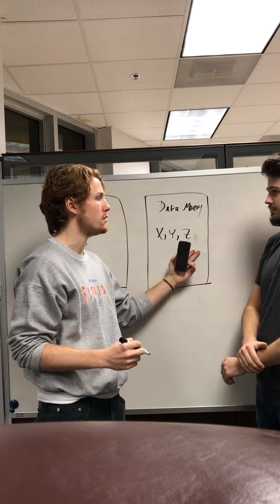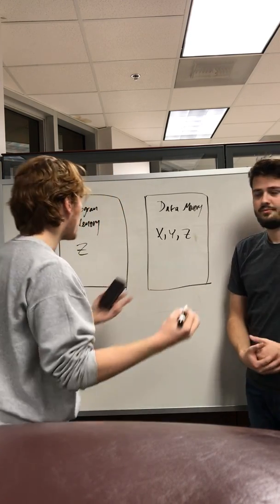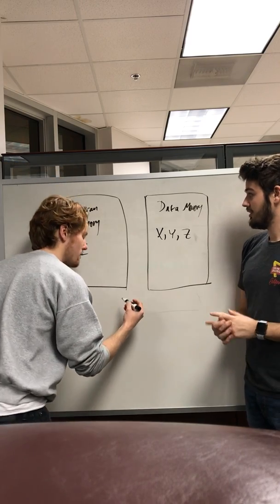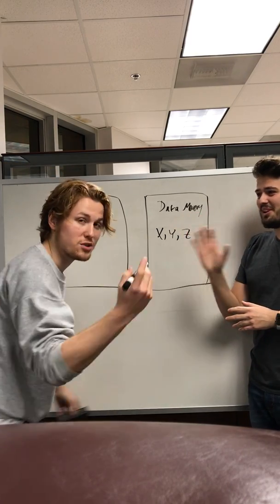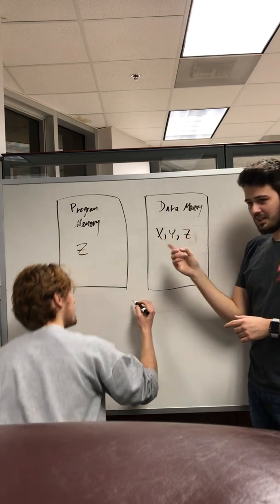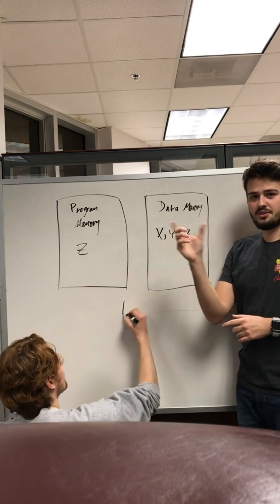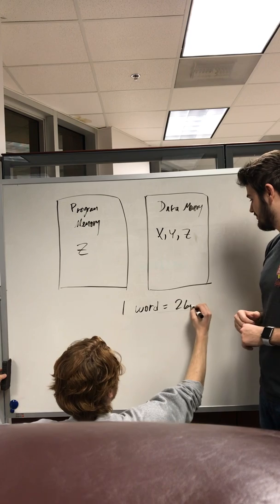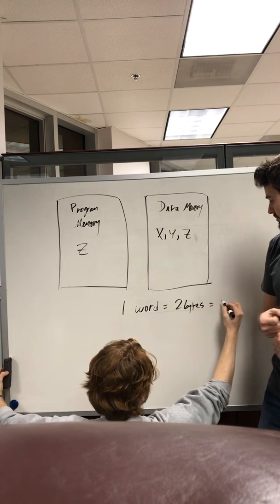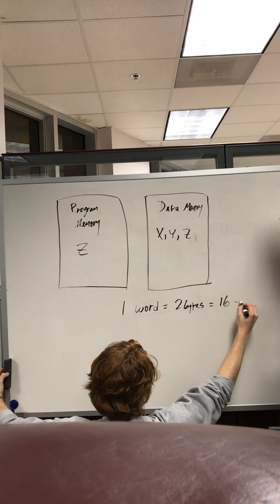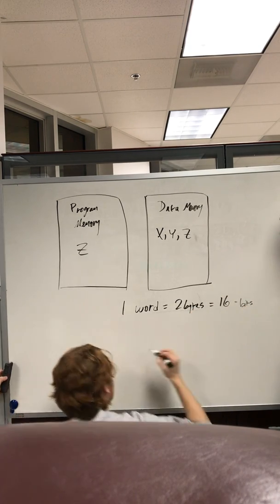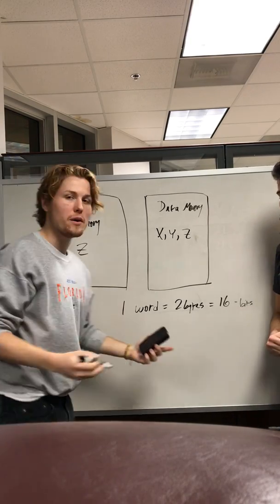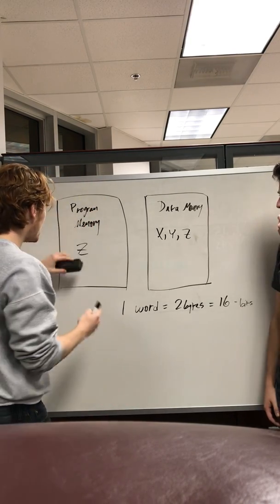Since program memory is in terms of words and data memory is in terms of bytes, let's clarify what a word is. A word can be defined as many things, but on our processor it's two bytes — so 16 bits — and in program memory every single address holds one word.